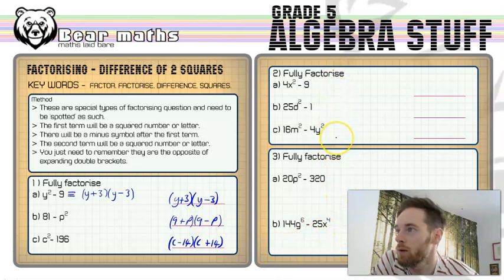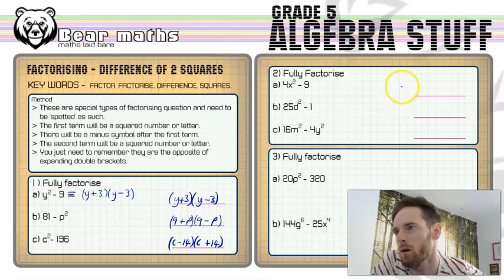Now in question two, we've got to fully factorize these ones. Now these could well be on a foundation paper. Technically they aren't too difficult, they're not too far removed from what I've just shown you, but more likely to be on higher paper.